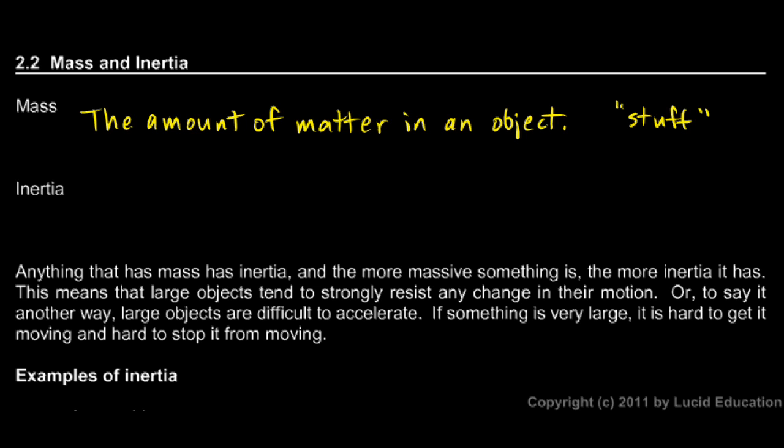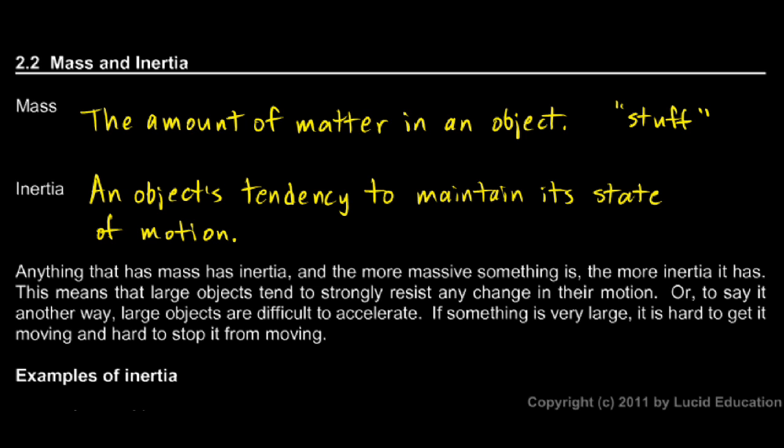Things that are moving, especially if they're big, if they have a lot of inertia, they're not easy to stop. So inertia is an object's tendency to maintain its state of motion. And by state of motion, I just mean how it's moving. If it's moving, it tends to keep moving, and if it's not moving, it tends to remain still.